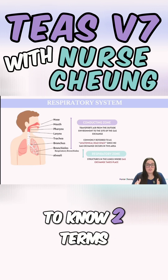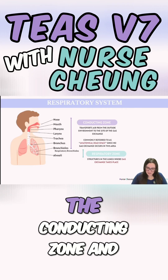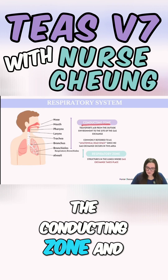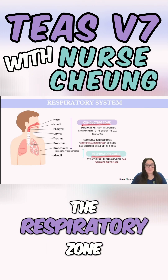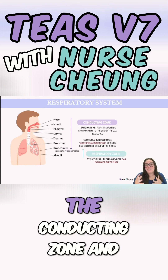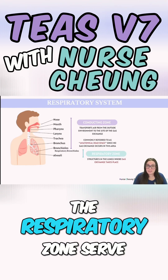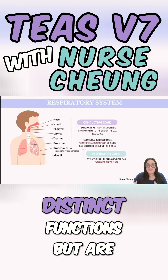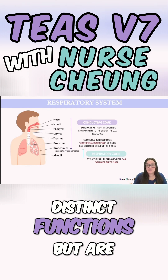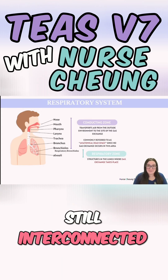You're going to need to know two terms when it comes to the lungs: the conducting zone and the respiratory zone. The conducting zone and the respiratory zone serve distinct functions but are still interconnected.